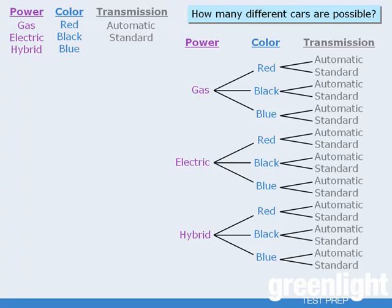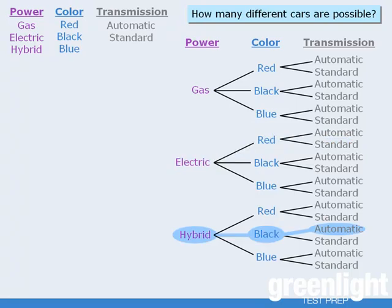Now that our tree is complete, notice that all of the different car configurations can be found in the various paths that exist in our tree. For example, this path represents a blue, gas-powered car with an automatic transmission. This path represents a red, electric-powered car with a standard transmission. And this path represents a hybrid car that is black with an automatic transmission. So the total number of different car configurations will be equal to the total number of different paths that exist in this tree.